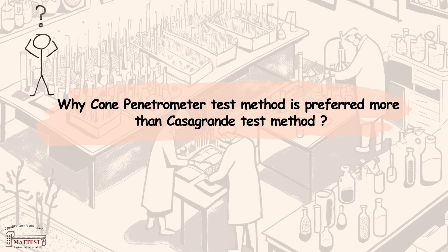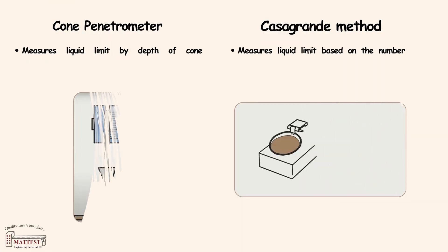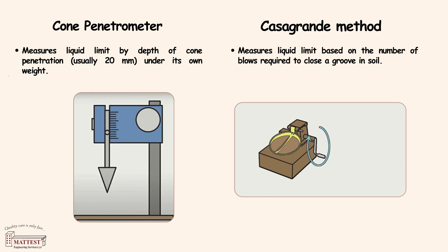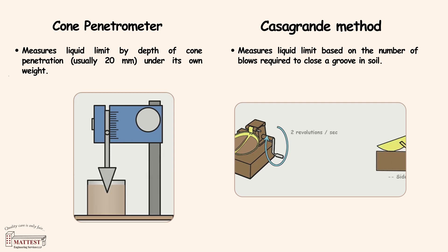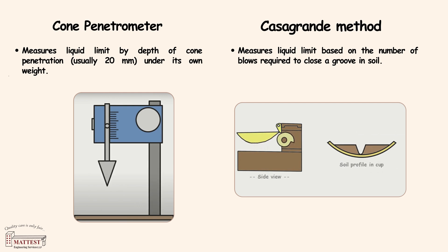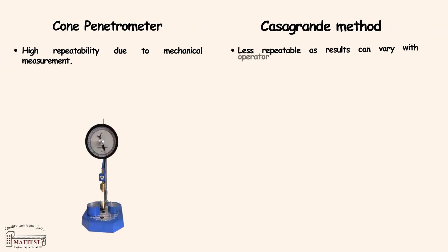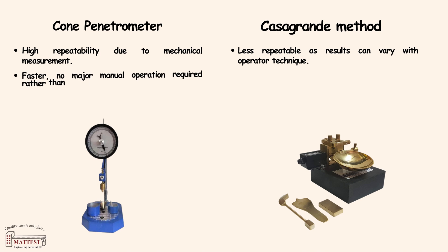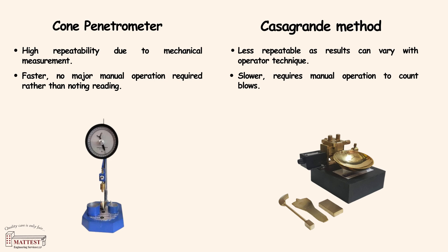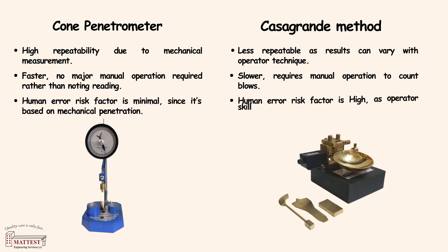Why is the cone penetrometer test method preferred over the Casagrande test method? Here we can see how both methods work. The Casagrande method can give results with major deviation due to manual operations, while the cone penetrometer test allows the cone to sink into the soil under its own weight. The cone penetrometer test method has high repeatability compared to the Casagrande method. It is also fast and easy to perform, and due to mechanical measurement, there is less chance of human error, as the Casagrande method mainly depends on the skill of the operator.